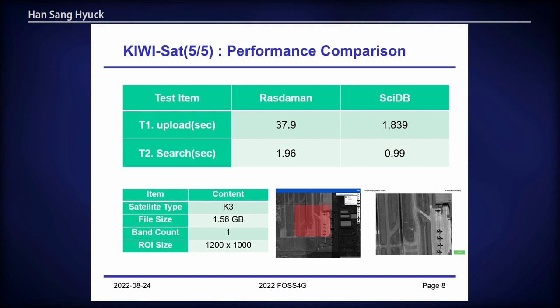At the beginning of QSET development, PostgreSQL was used as the database system. But as PostgreSQL ended its open-source policy in around early 2019, we had to consider changing it. We surveyed some array database systems and selected Rasdaman as a candidate. Before applying Rasdaman to QSET, we checked its functions for interoperability and tested its performance against PostgreSQL — the results are shown here.